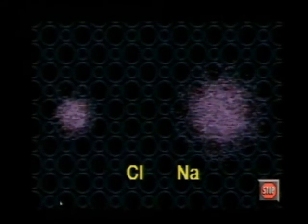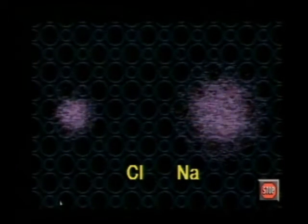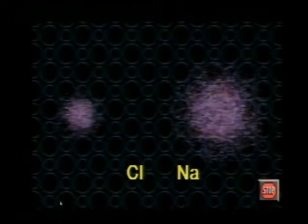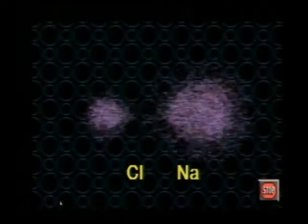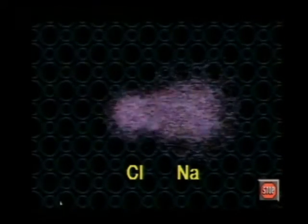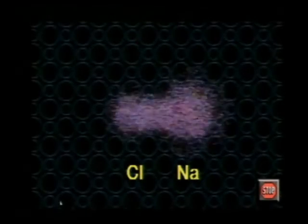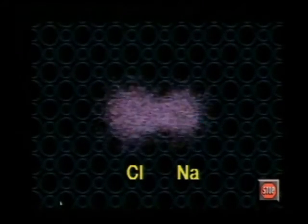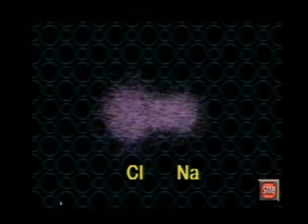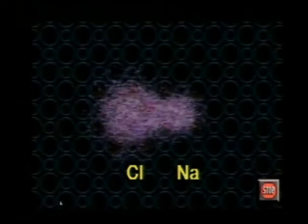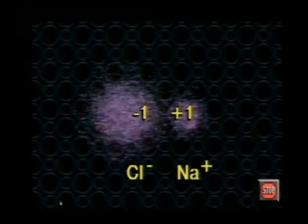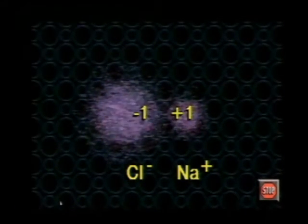An ionic bond occurs when one atom attracts another atom's electron so strongly that it actually pulls one or more electrons from that other atom. When an atom gains or loses an electron, it becomes an ion. Ions of opposite charge attract each other and form ionic bonds.